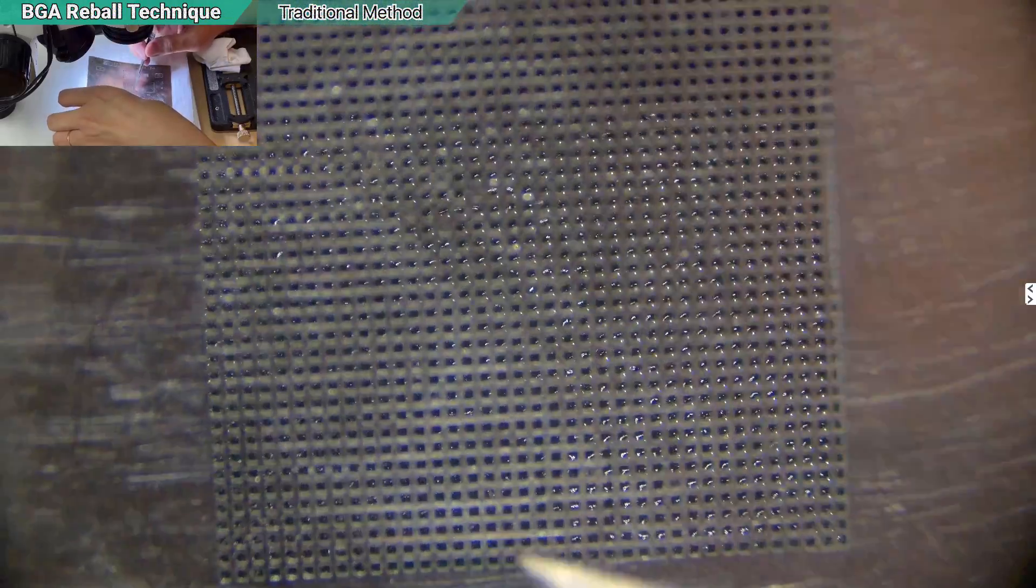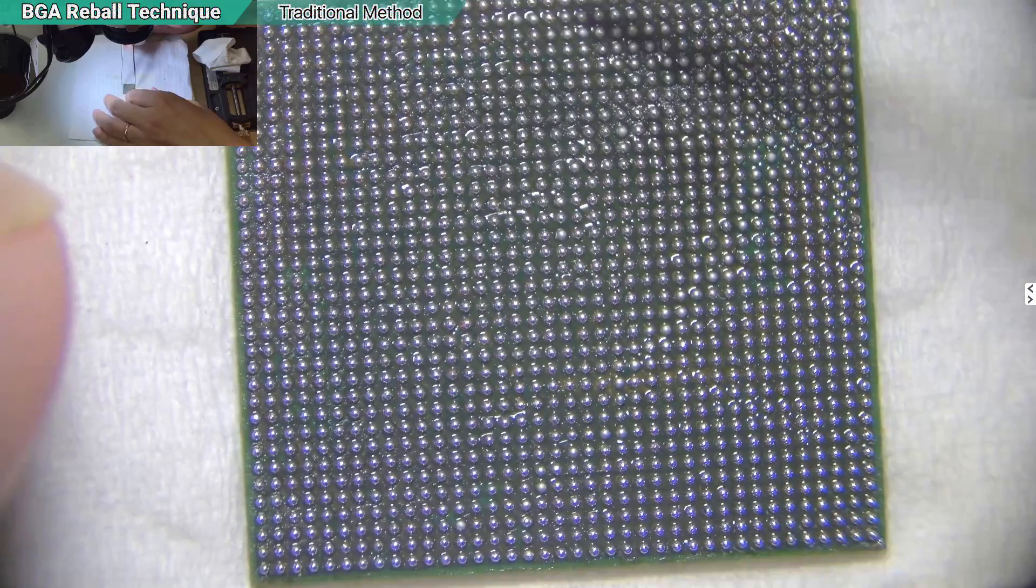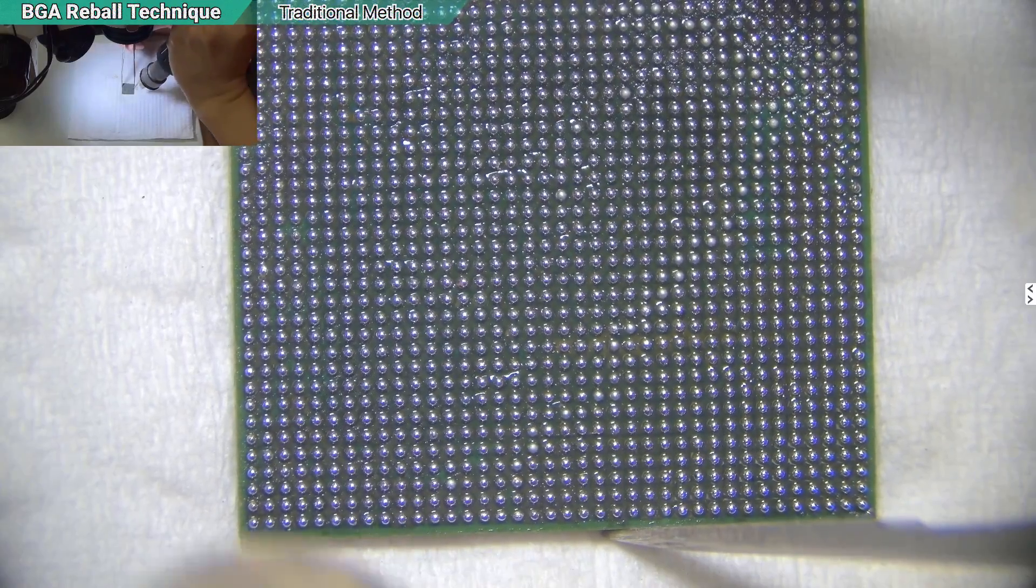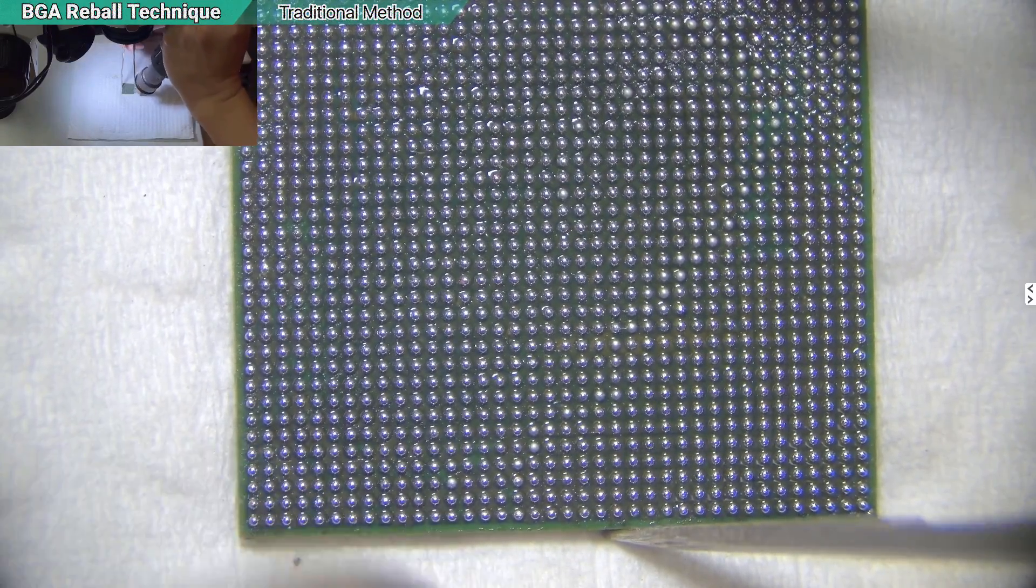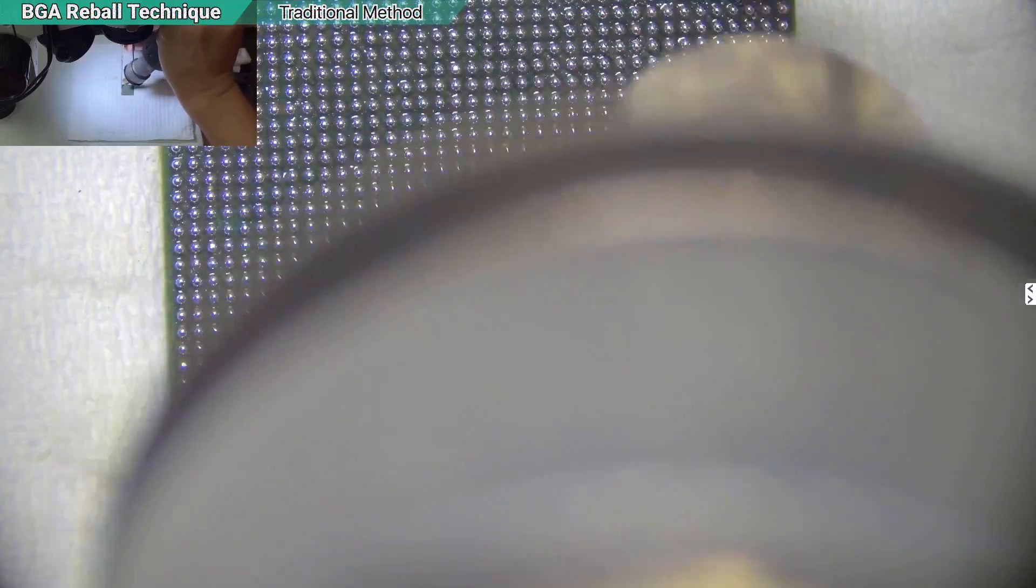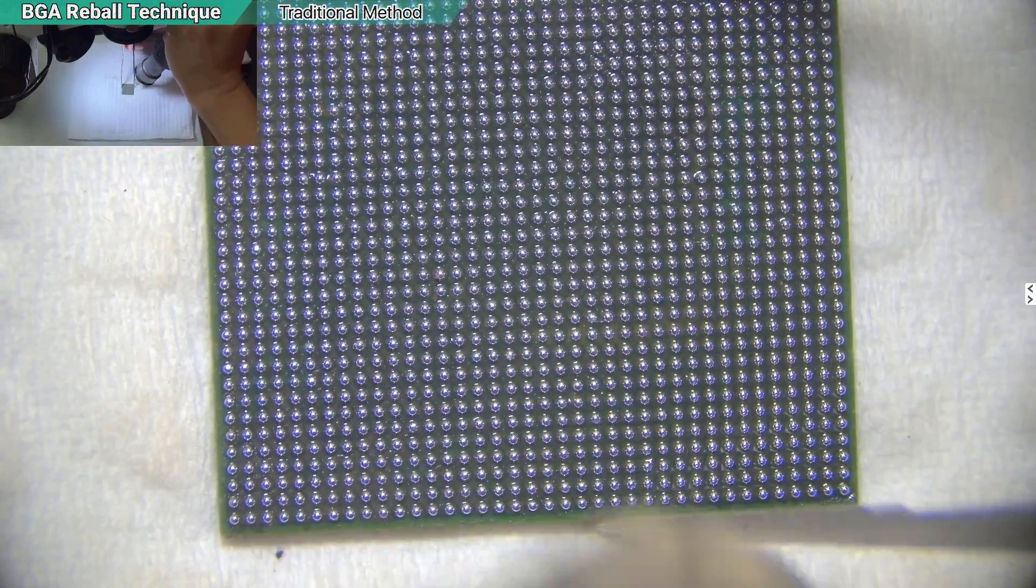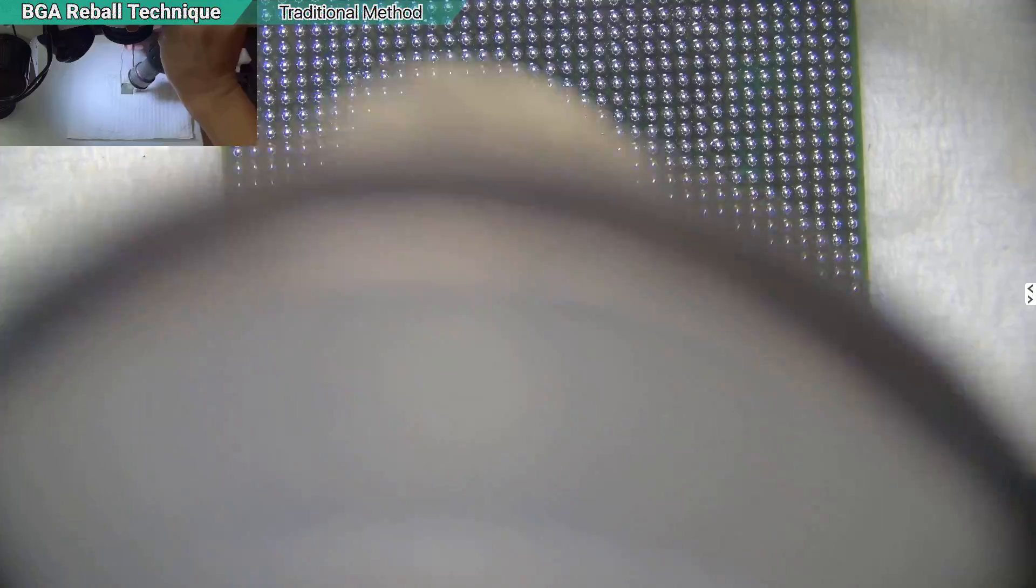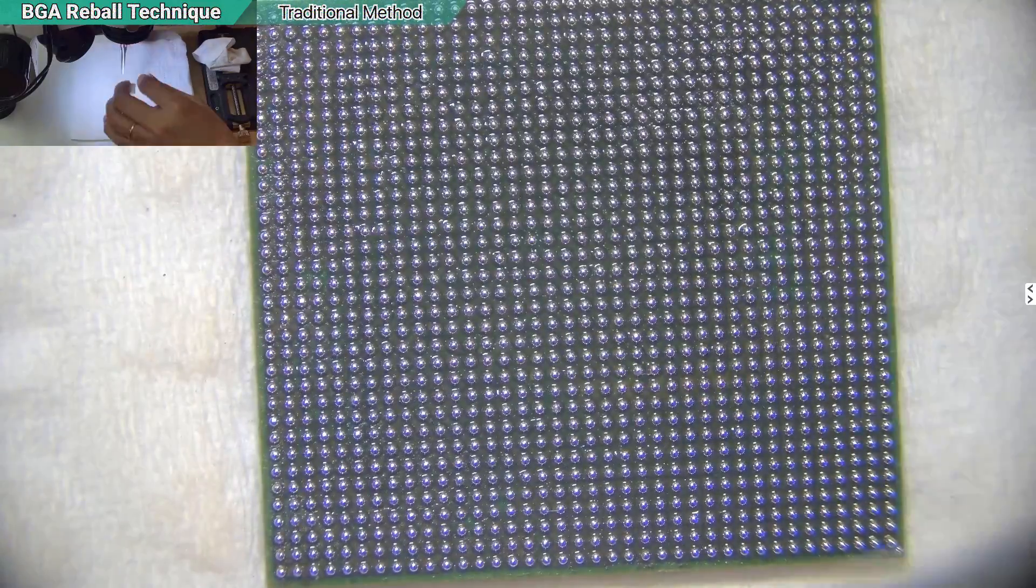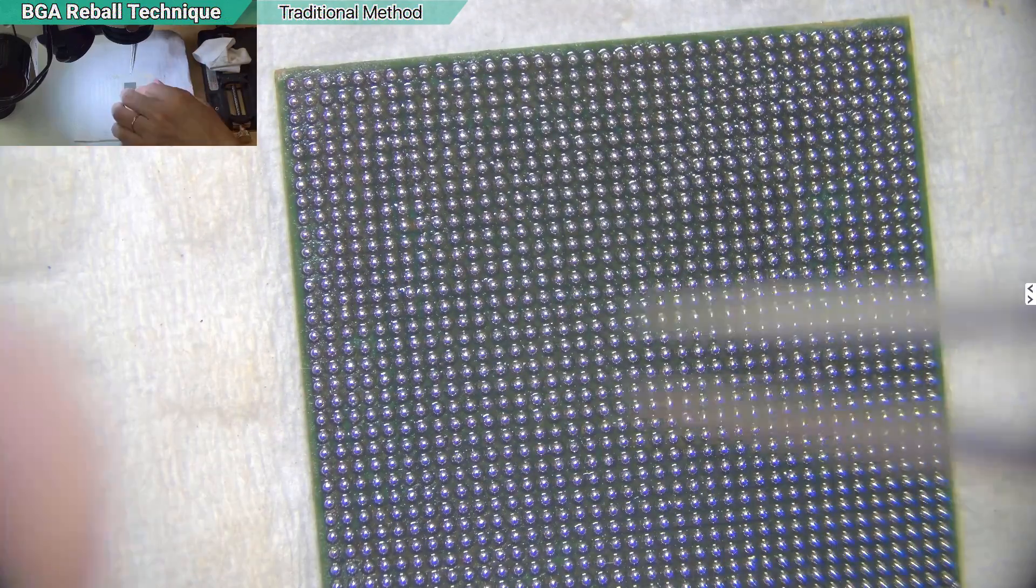Okay, pop it up. There we are. And hold the IC, reflow it. Why we need to reflow is because we need to make sure none of the balls are not installed, they are running around. Okay. This is how the traditional way of reballing. Okay, reballing has many techniques. This is just one of it, the traditional method.